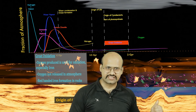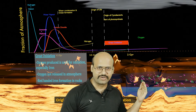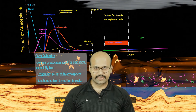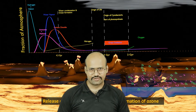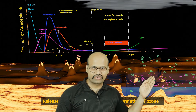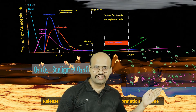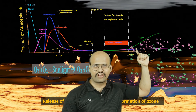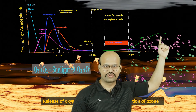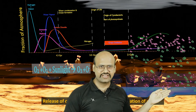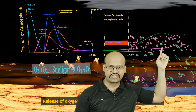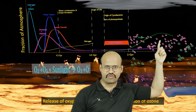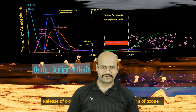So oxygen was not able to reach the atmosphere initially, but around 2 billion years ago the oxygen started to increase in the atmosphere. As the level of oxygen increased and reached the upper layers, we see the formation of the ozone layer because of this reaction.